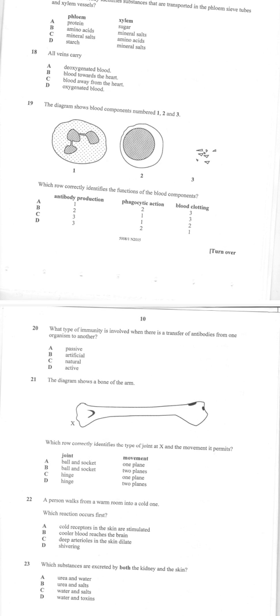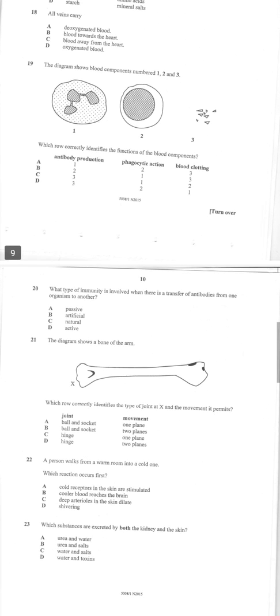Number 18: all veins carry blood towards the heart. If we say they carry deoxygenated blood, we'd be lying because the pulmonary vein actually carries oxygenated blood, and the umbilical vein also has oxygenated blood. So all veins carry blood towards the heart.